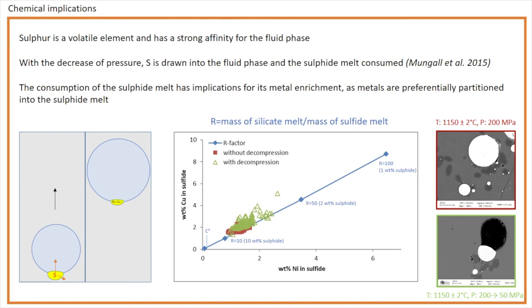Moving from 10 to 1% sulfide melt in this system means moving from about 1% nickel and 1% copper, to more than 6% nickel and 8% copper. This corresponds to an increase in the R-factor from 10 to 100, but higher R-factors can be reached if sulfide consumption is even more extensive.